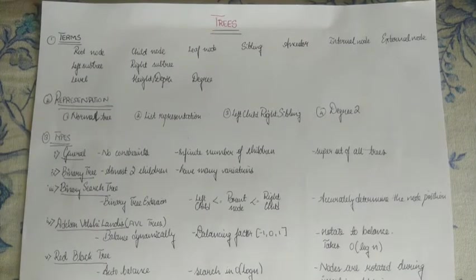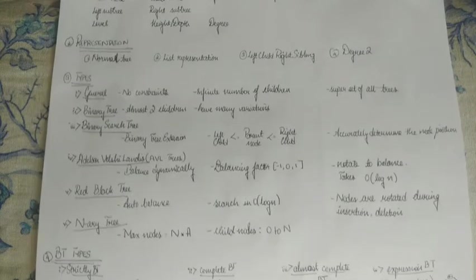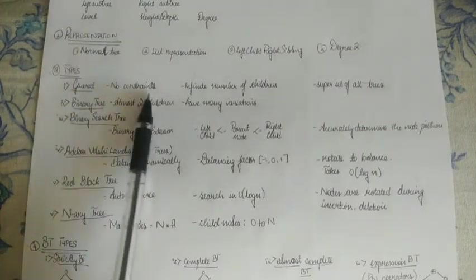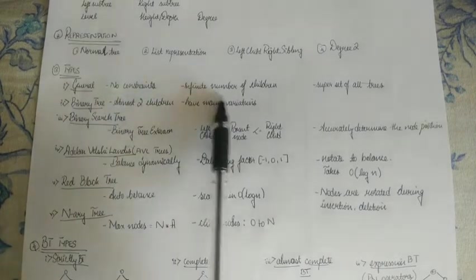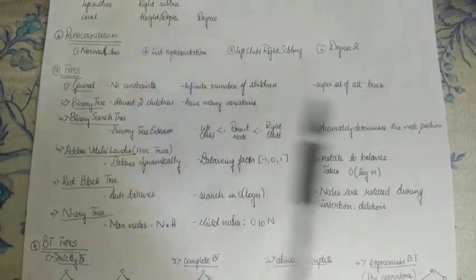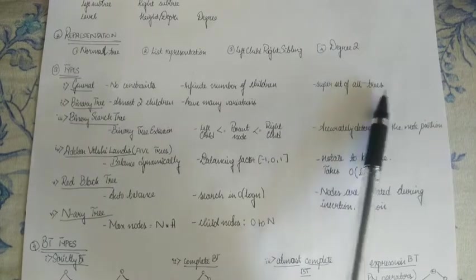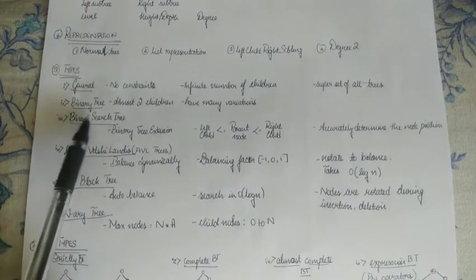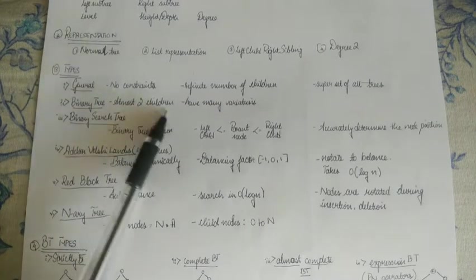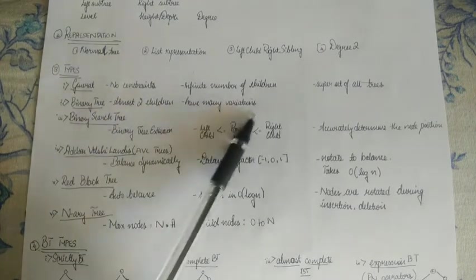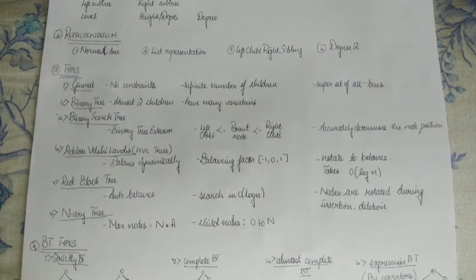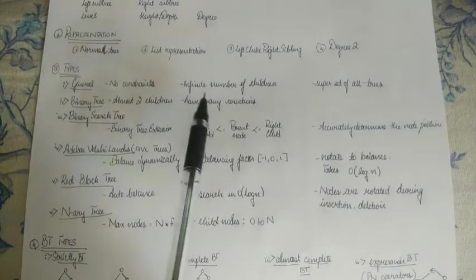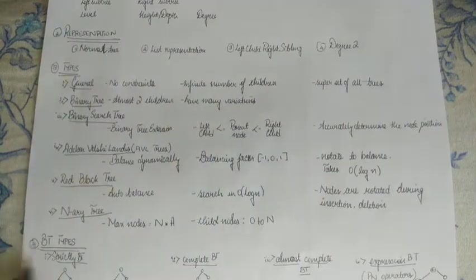Next, moving on to types of trees. So, there exists general tree where there are no constraints and infinite number of children nodes can be there. And superset of all trees, it is a general tree. Next, binary tree. At most, two children. So, it can have many variations. See here, as I mentioned, there are types of binary trees. Since they can have many variations, there exist types also.